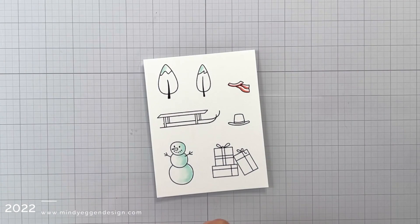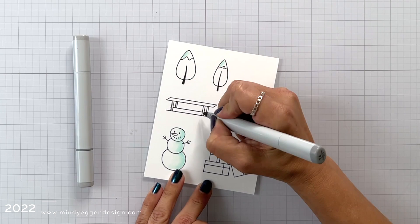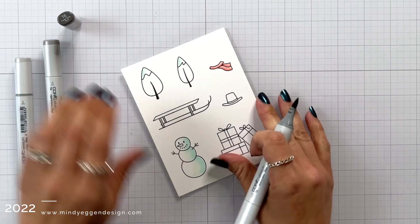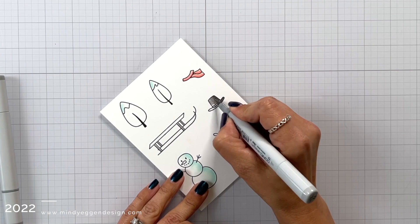I also added the snow to the top of the trees. I have R22, 21 and 20 for the scarf. I have some light grays for the parts of the sled.